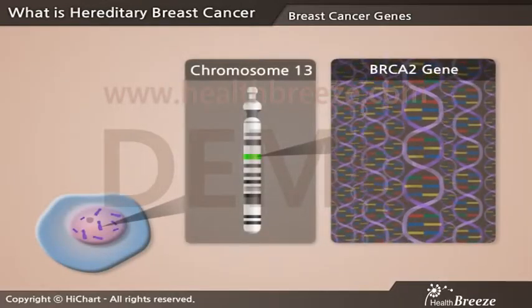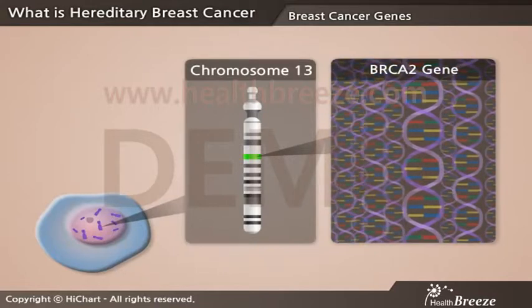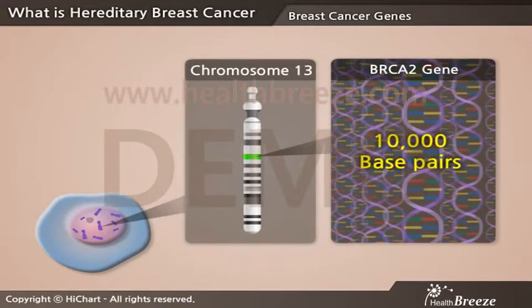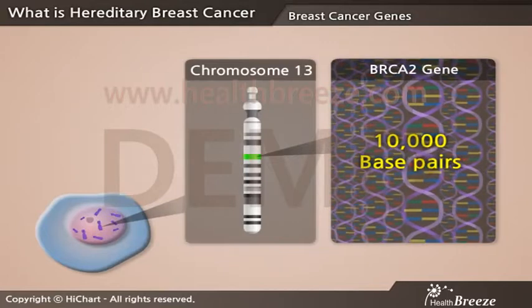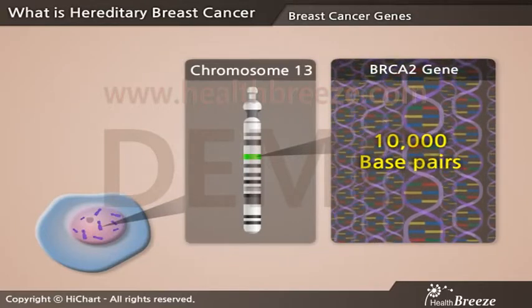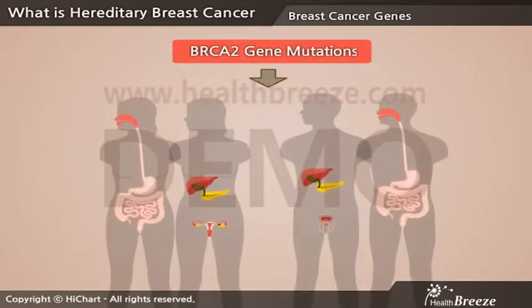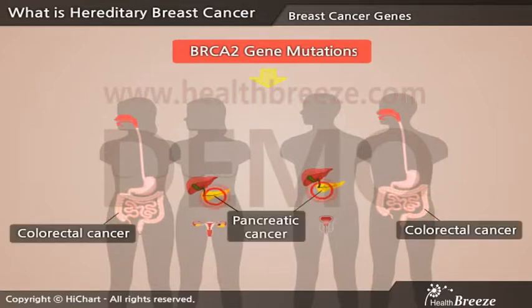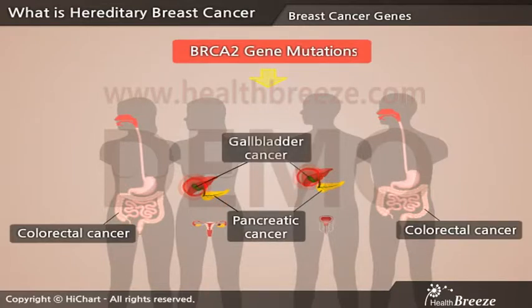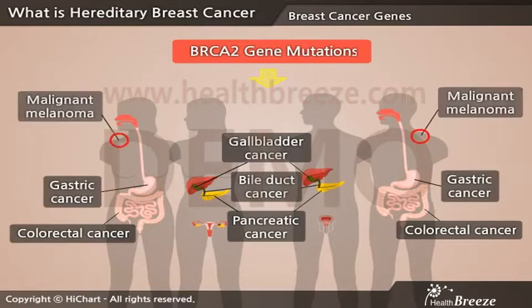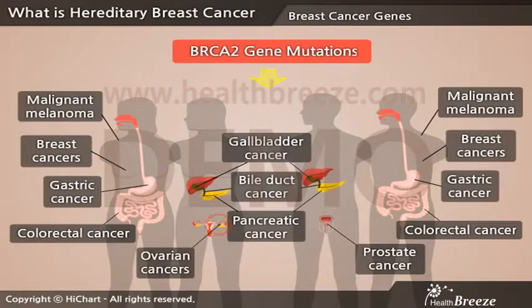The BRCA2 gene, on the other hand, is comprised of more than 10,000 base pairs and is almost double the size of the BRCA1 gene. Mutations in the BRCA2 gene are known to increase the risk of colorectal cancer, pancreatic cancer, gallbladder cancer, bile duct cancer, gastric cancer, malignant melanoma of skin, and prostate cancer, in addition to breast and ovarian cancers.